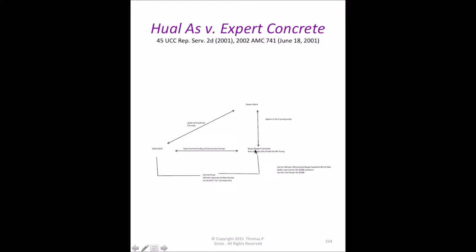These are big, expensive pumps — roughly $150,000 each — used to pump concrete at construction sites. The buyer is trying to purchase four of these pumps. The seller demands a letter of credit, so the buyer goes to his bank to open an LC. However, the buyer's bank reviews the buyer's creditworthiness and determines it is only willing to extend credit for three of the pumps.